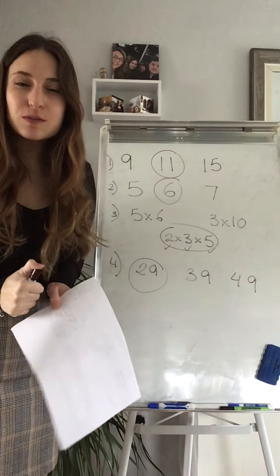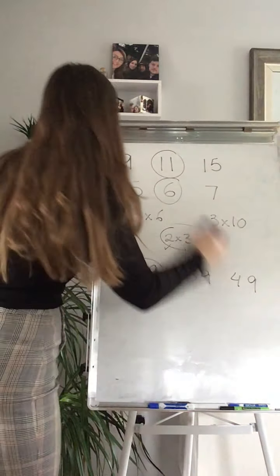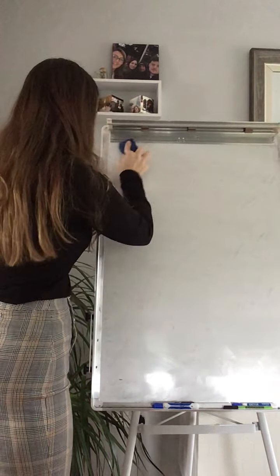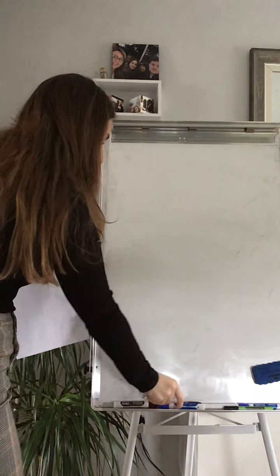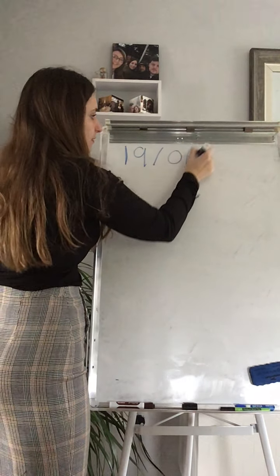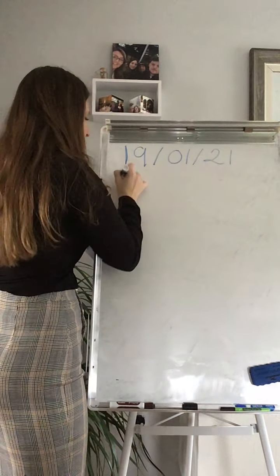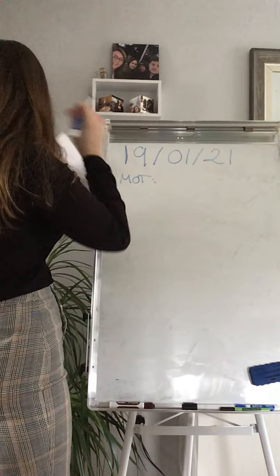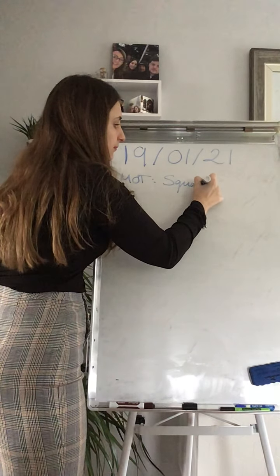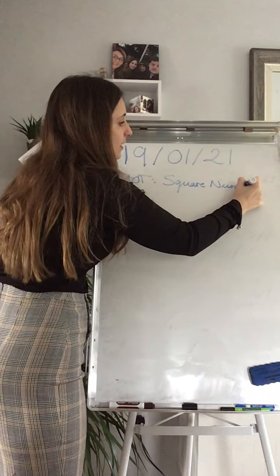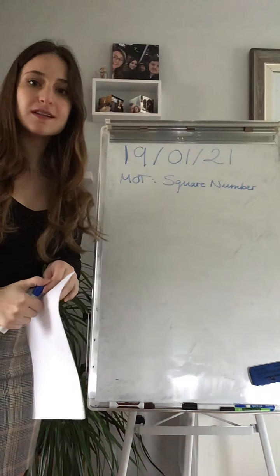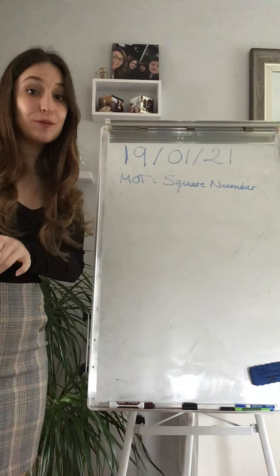Let's see our MOT from today and we are going to be looking at different numbers. What type of numbers am I going to be looking at? Today is the 19th of the 1st of the 21st and we are doing our MOT where we are going to be looking at square numbers. It's not a number that looks like a square and has corners, four corners, so don't worry. It's a type of numbers.